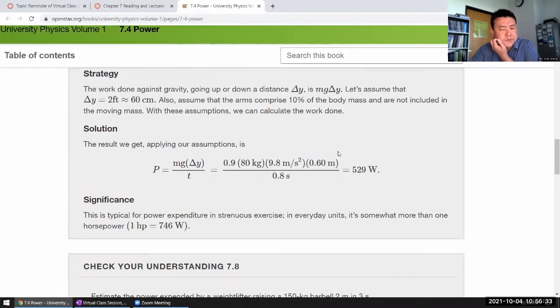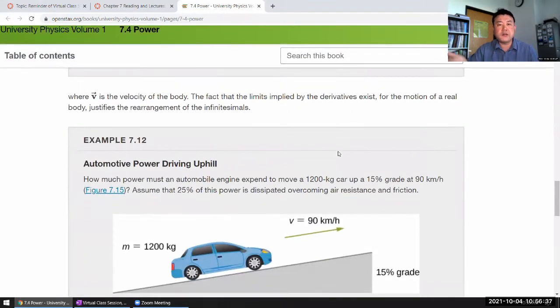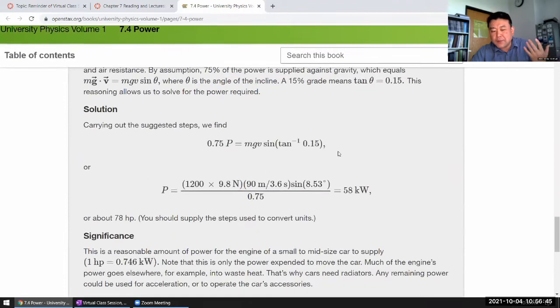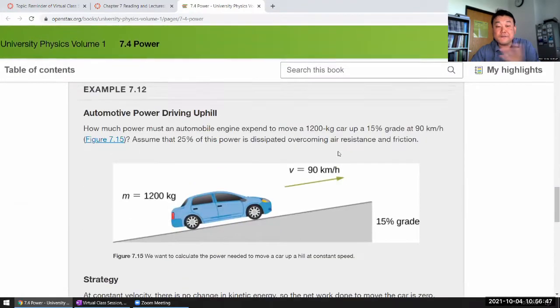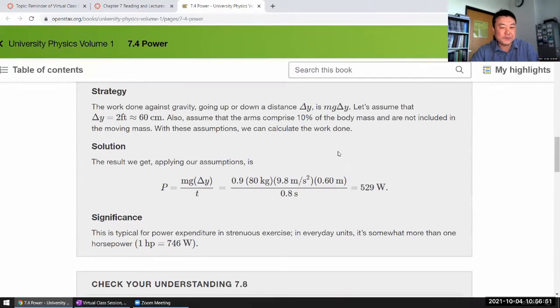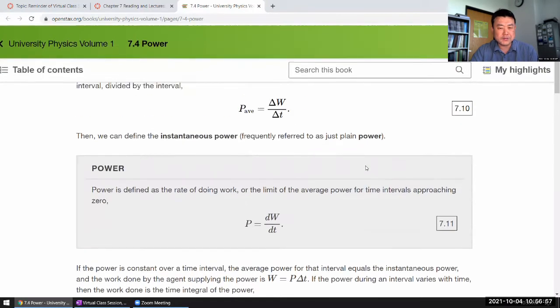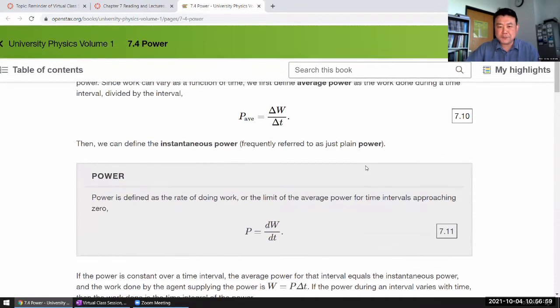In physics 4b, we do spend a little bit more time on power because there are relationships between circuit elements and circuit quantities and power. In physics 4a, specifying power is often just a different way to give you amount of energy.